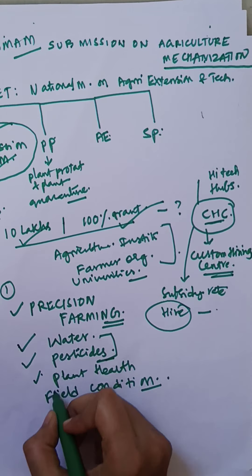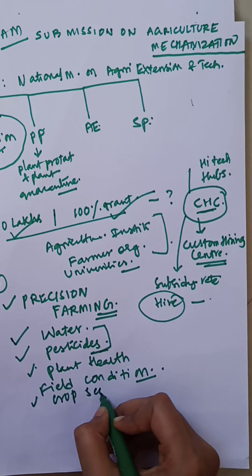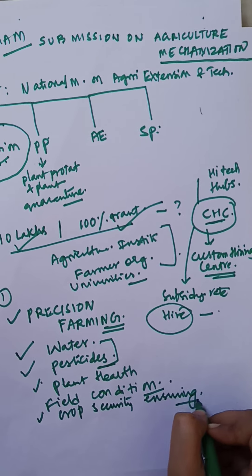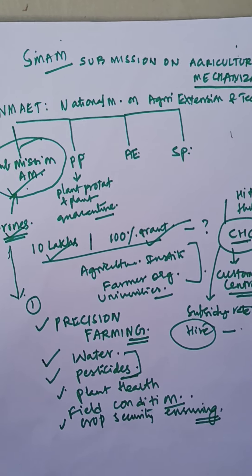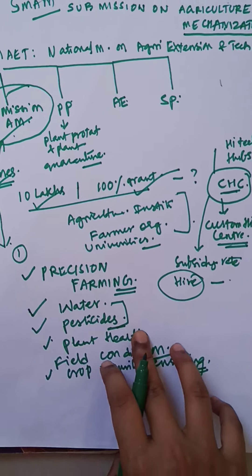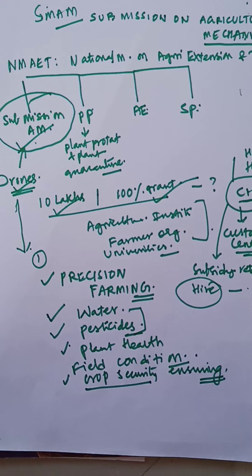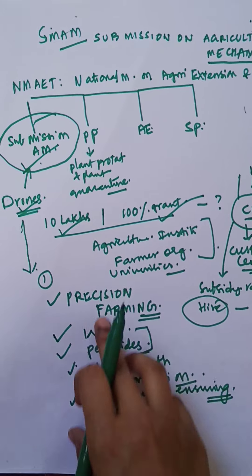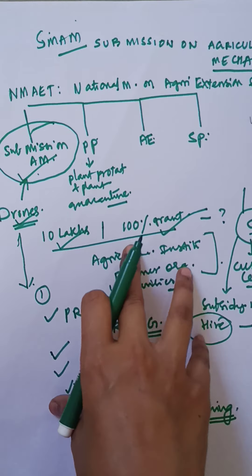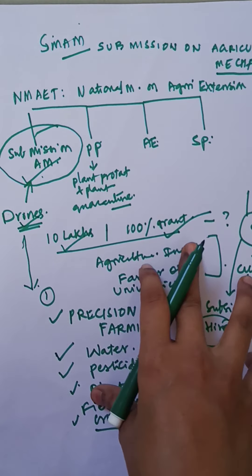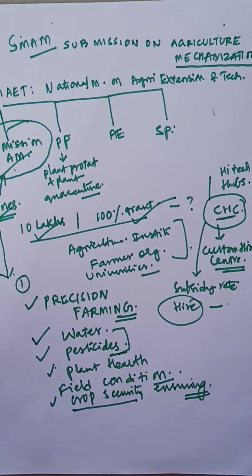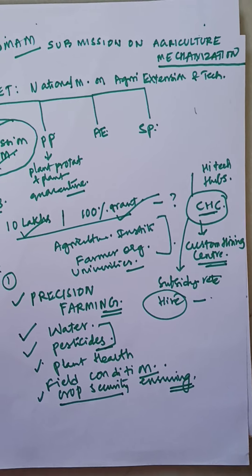First, there is crop security and ensuring. This means if any crops are damaged by pests, we can detect and protect them. There are many uses, so definitely drones will be beneficial because the Union Ministry launched this program. This is a very important point for government exams.